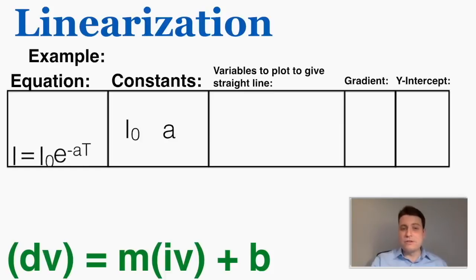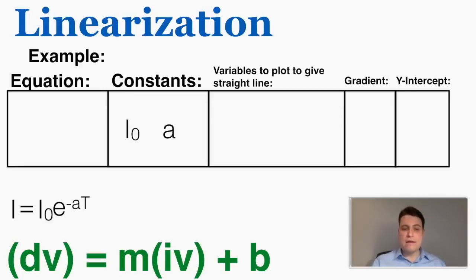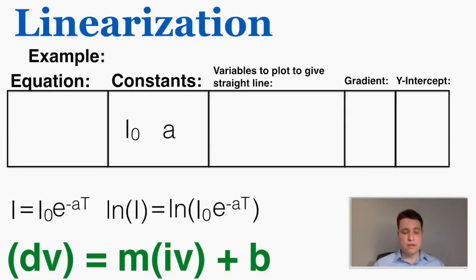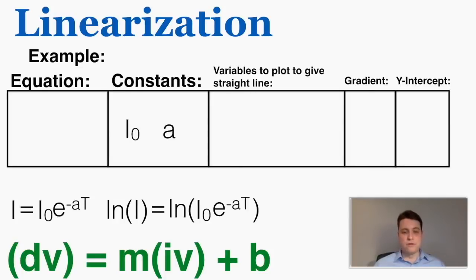One more example: we're going to use the equation i equals i₀ times e to the power of negative a times capital T, where the constants are i₀ and a, and the variables are i and capital T. I know I'm probably going to take the natural log of both sides of this function — if you want to get variables out of an exponent of e, you're going to end up taking the natural log. So if I take the natural log of both sides, I get the natural log of i is equal to the natural log of i₀ e to the power of negative a times capital T.